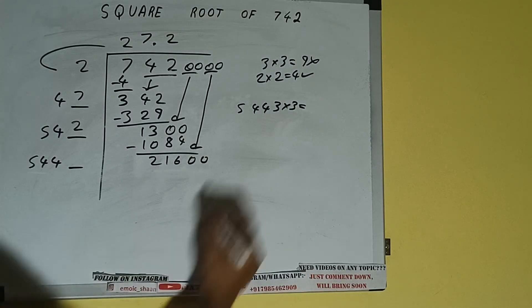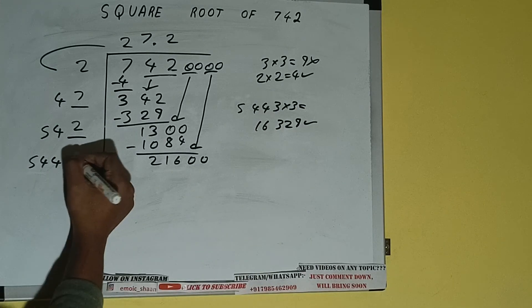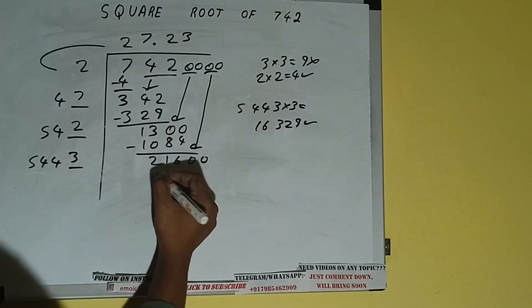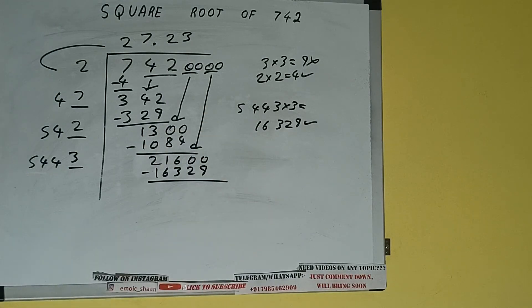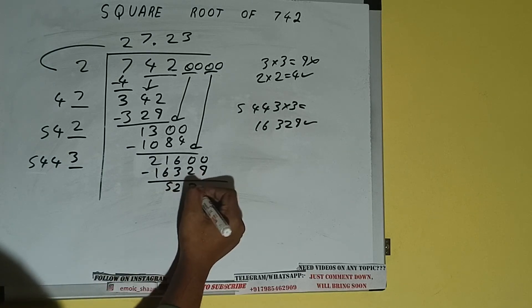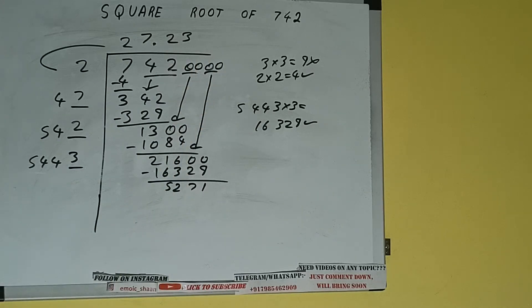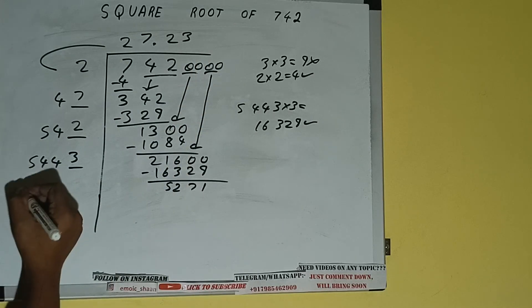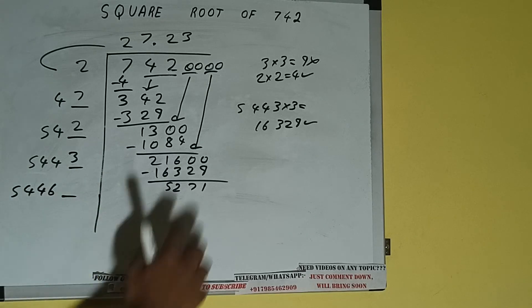And we'll be getting 16329 which is good to take. So 3 here and 3 here, 16329 subtract, and we'll be left with 5271. Now 5443 into 3 we did, so add both. So 5443 plus 3 will be 5446 and one digit extra.